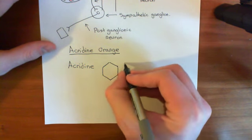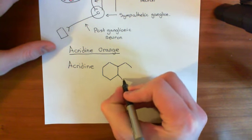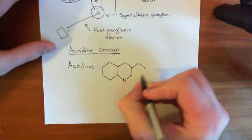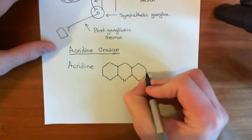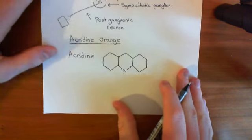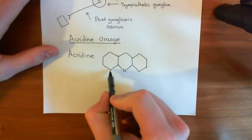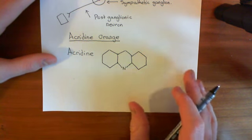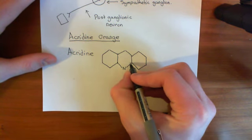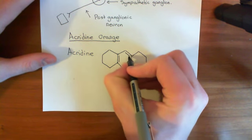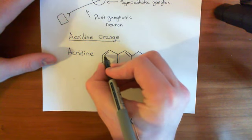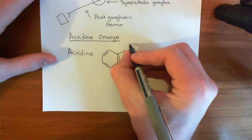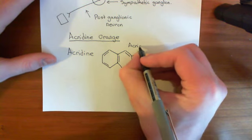Acridine is three six-membered rings stuck together. I'll draw the skeletal structure of this. Here's your first six-membered ring. Then your middle six-membered ring is the odd one out — it has a nitrogen at the bottom. And then the final six-membered ring is just another six-membered carbon ring. Where I just draw corners, that means a carbon atom — so you have thirteen carbon atoms in total. It has alternating single and double bonds in every single one of these rings. That is the structure of acridine. Wherever there's a free bond, that carbon will have a hydrogen off it.